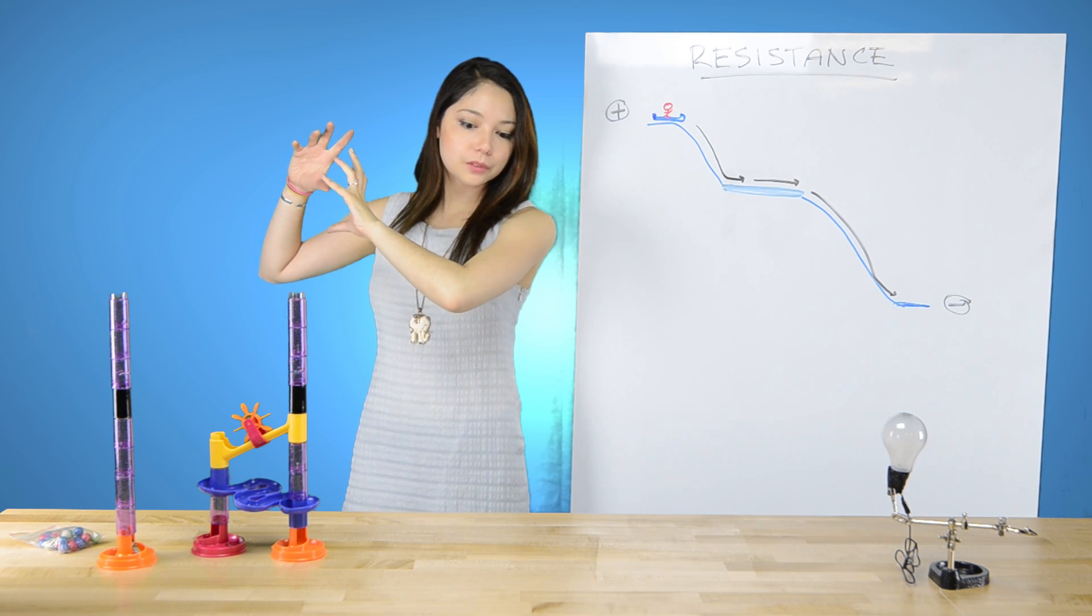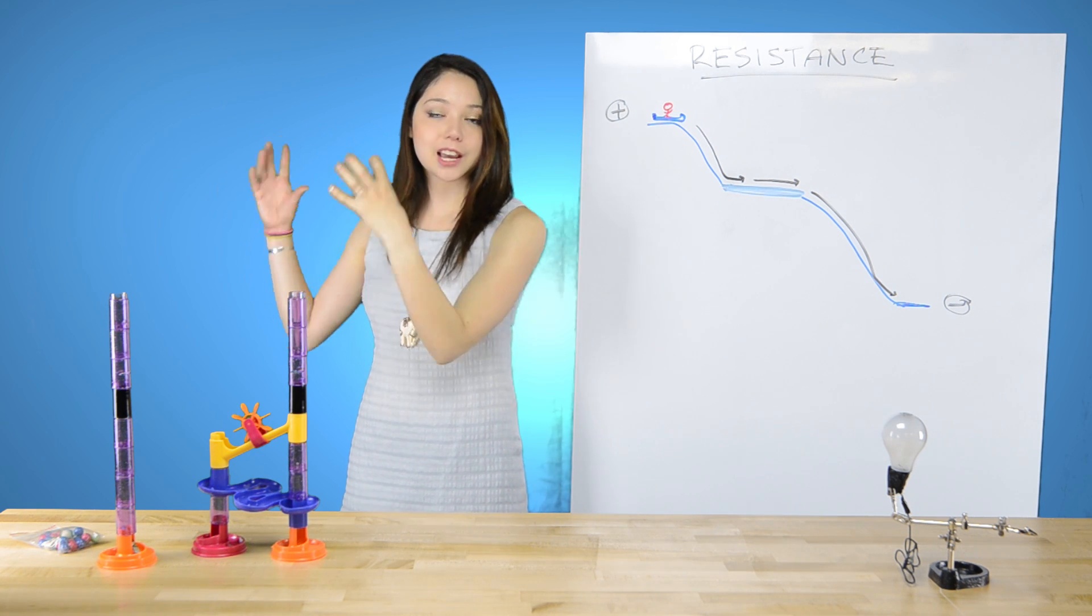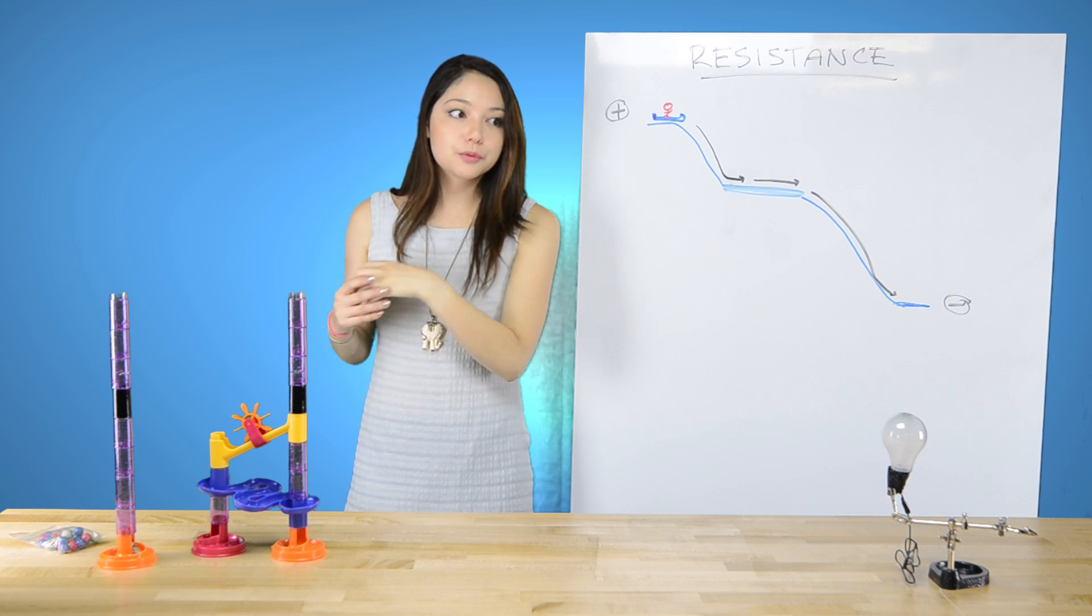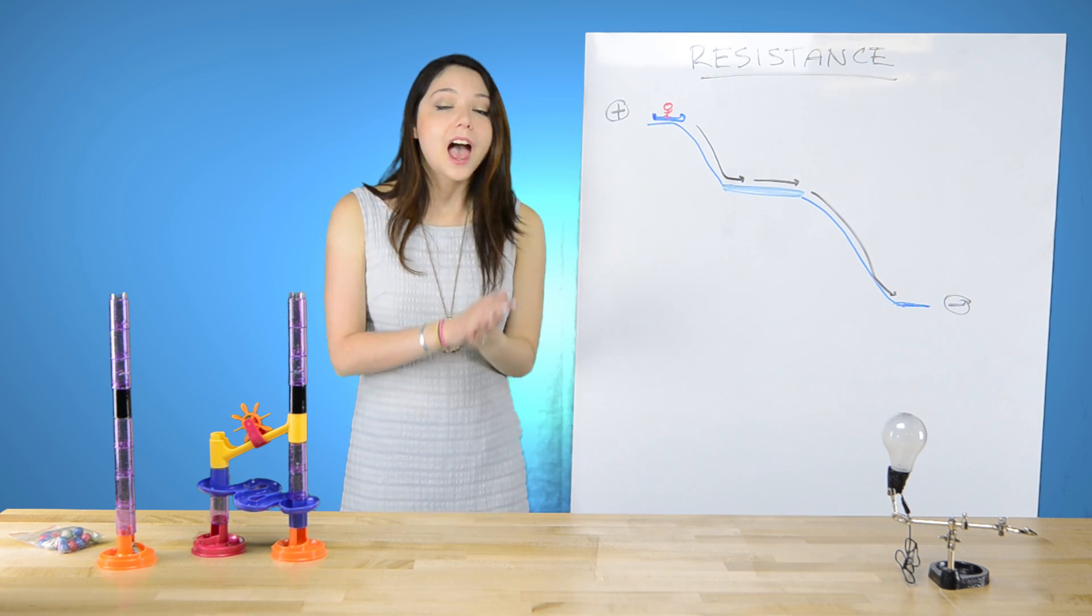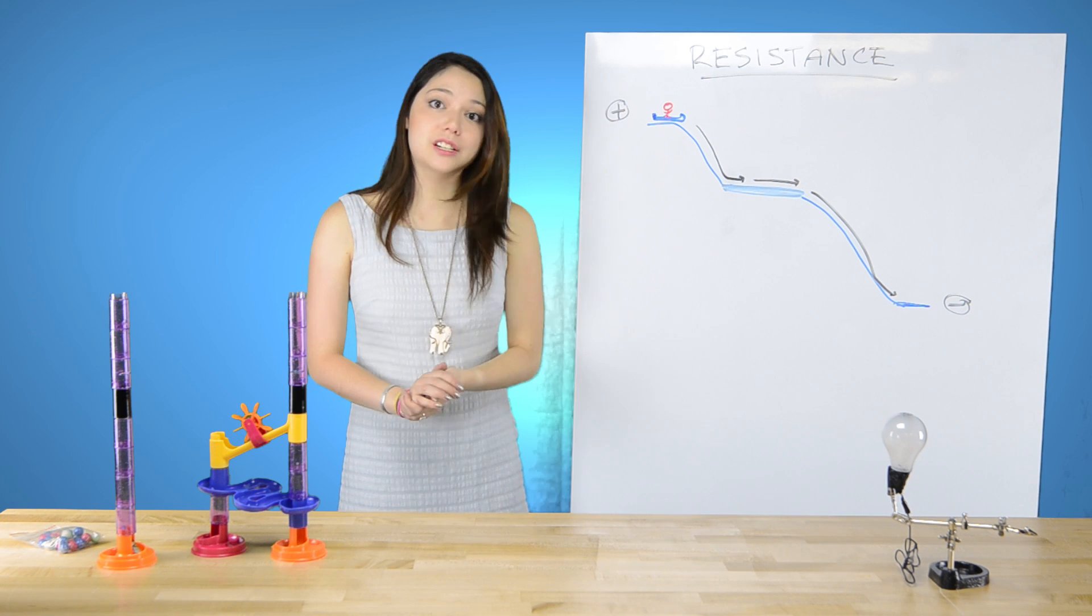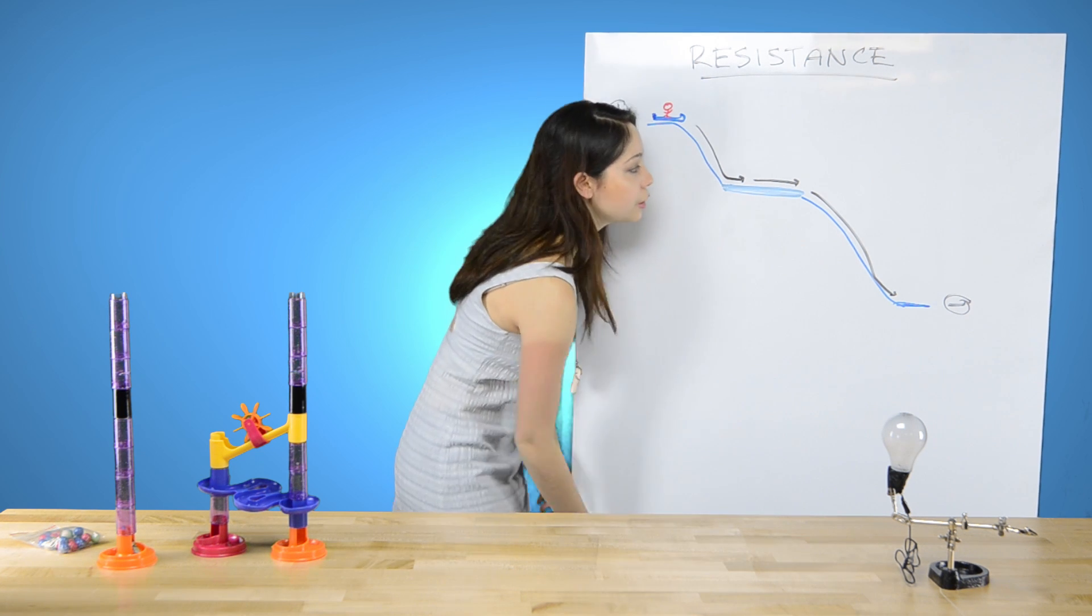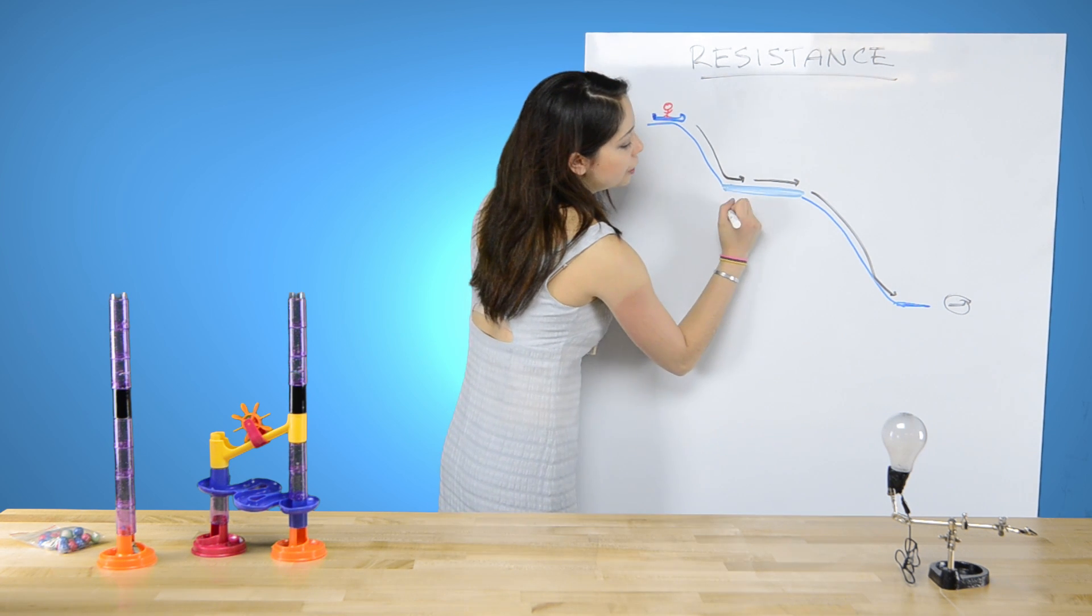In the imaginary physics land professor world, there are perfect wires and they have no resistance. But in the real world, every single thing that conducts electricity has an internal resistance. Even batteries have a resistance. Let's imagine this as just a normal resistor.